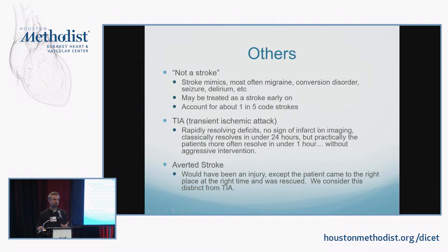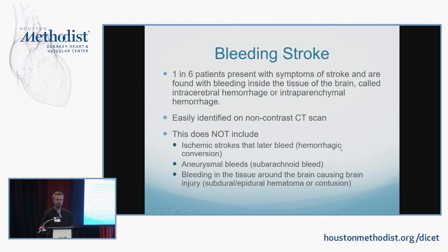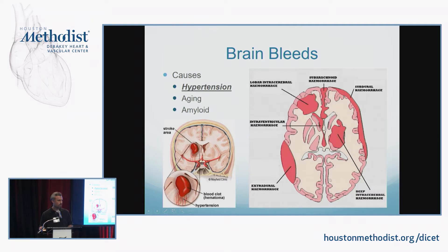Keep in mind stroke mimics — patients present with focal hemiparesis and headache, and when worked up nothing is found in terms of their circulation; it may be more likely a hemiplegic migraine. TIA's textbook definition is that symptoms resolve in under 24 hours, but in reality, if you deprive the brain of blood for more than one to two hours you'll almost always see an infarct. So a negative MRI in a patient with persistent symptoms lasting one to two days is consistent with a non-vascular etiology. An averted stroke means the patient had stroke symptoms with a vascular cause but we intervened and prevented the stroke. Bleeding strokes are the other one in six patients — easily identified. Hemorrhages from hypertension are usually in deep structures: basal ganglia, thalami, pons, and cerebellum.